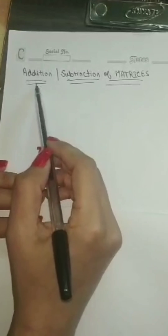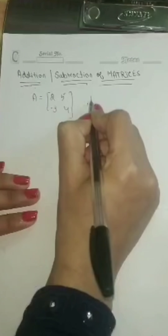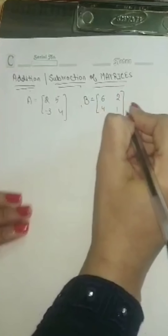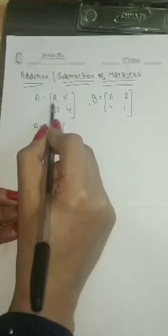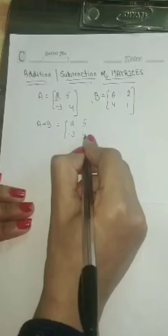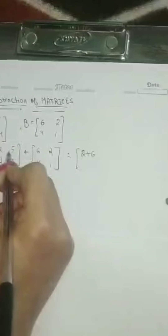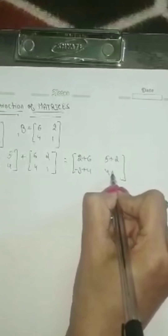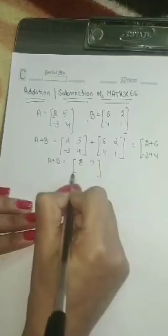Next we are going to discuss addition and subtraction of matrices. For example, matrix A is 2, 5, minus 3, 4 and matrix B is 6, 4, 2, 1. If I need to find A plus B, I will simply add the corresponding elements: 2 plus 6, 5 plus 2, minus 3 plus 4, 4 plus 1. So A plus B is equal to 8, 7, 1, 5. I can also find A minus B from this.